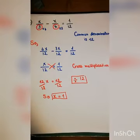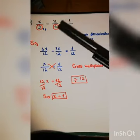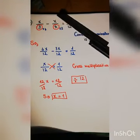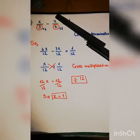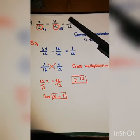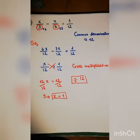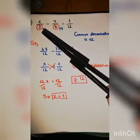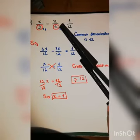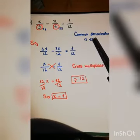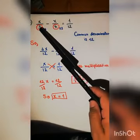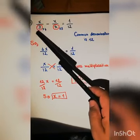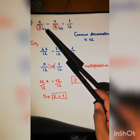Moving to question number two: we have subtracting fractions, x over three minus x over four equals one over twelve. Again, we cannot add or subtract fractions unless we fix the denominators. For denominators three and four, the common denominator will be twelve.